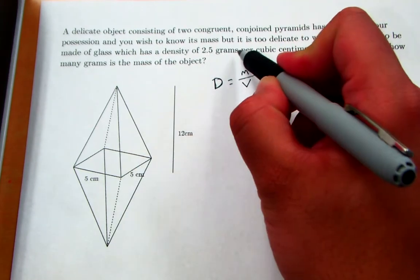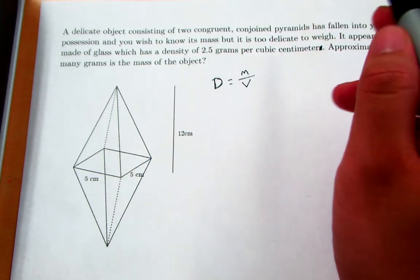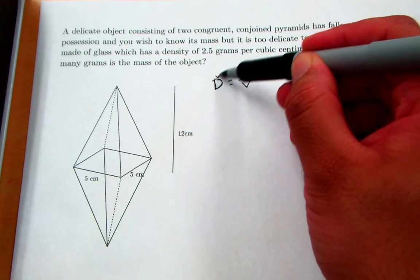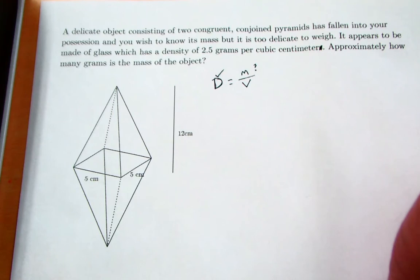We're given that the density of the material here is 2.5 grams per cubic centimeter, so we need to know this. We want to know the mass, which means there must be a way to find the volume, right?